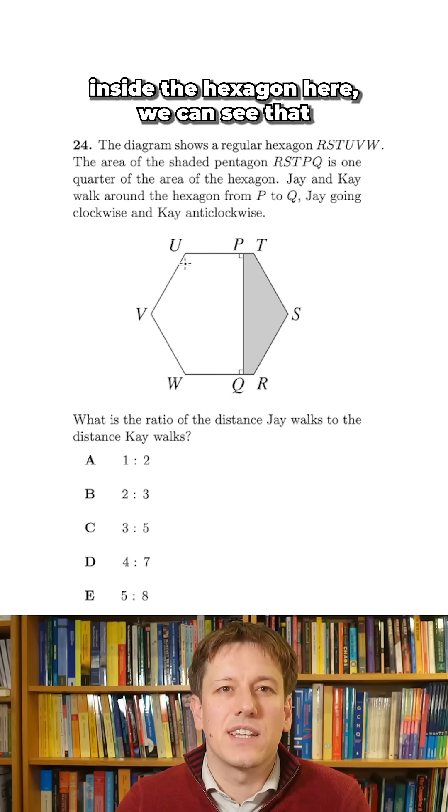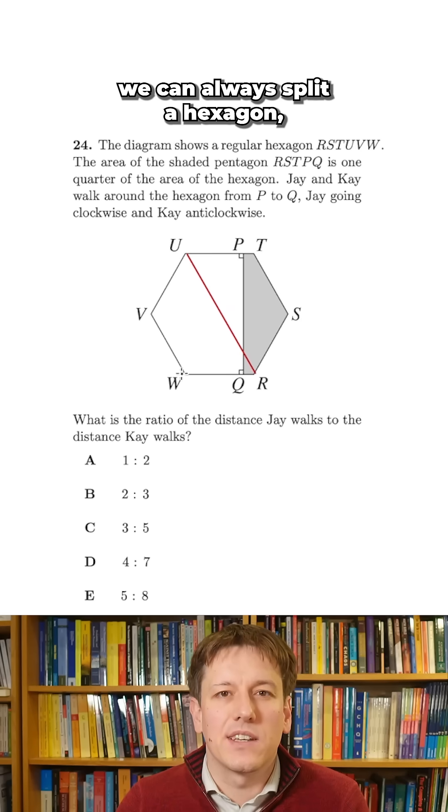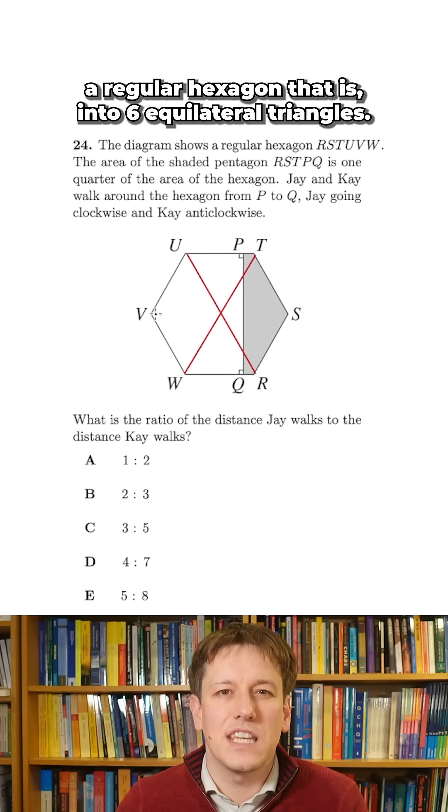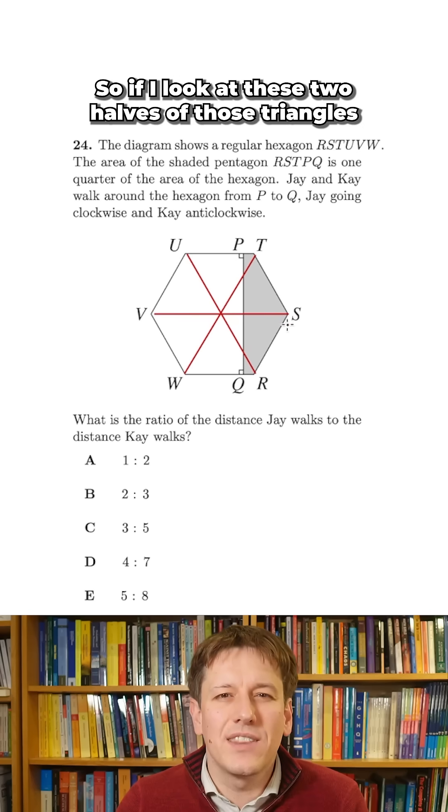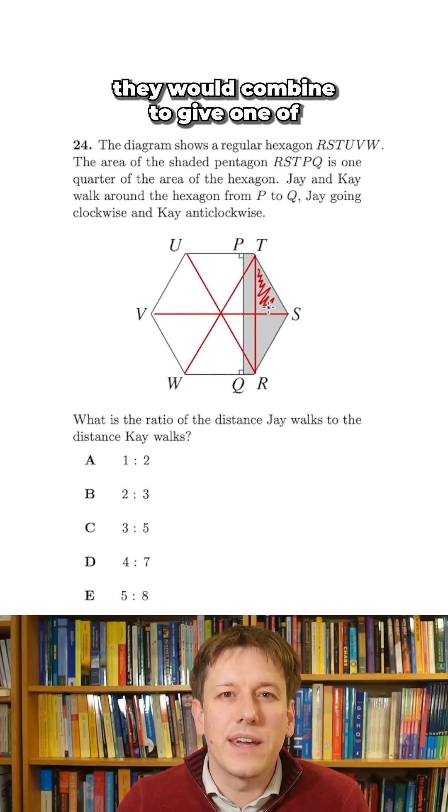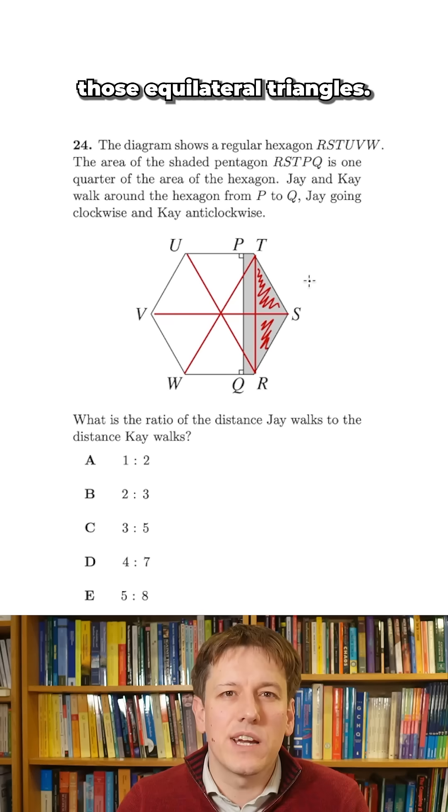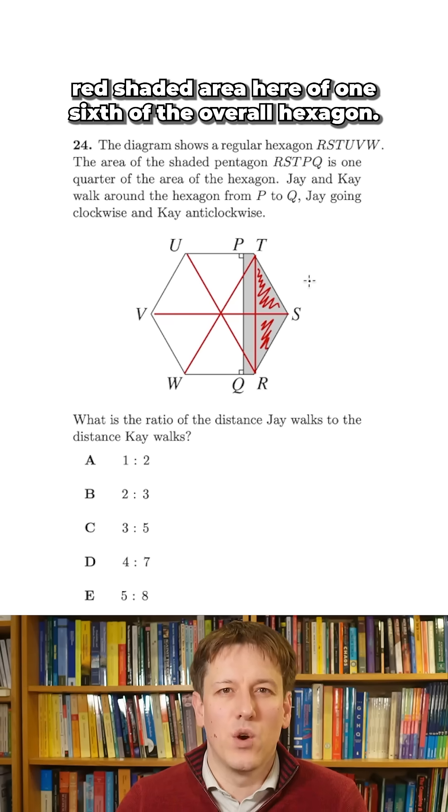So if I draw a few lines inside the hexagon here, we can see that we can always split a regular hexagon into six equilateral triangles. So if I look at these two halves of those triangles on the right, they would combine to give one of those equilateral triangles. And so I've got this red shaded area here of one sixth of the overall hexagon.